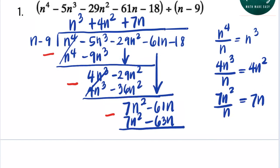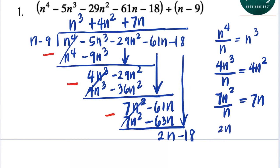Now we subtract: 7n squared minus 7n squared is 0. Negative 61n minus negative 63n is 2n. Now we bring down the last term, negative 18. Repeating the process, we divide 2n by the first term, n, and that is 2. So 2 is the last term of the answer.